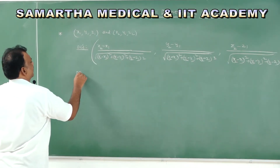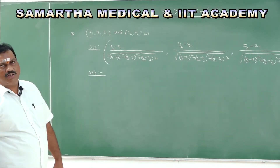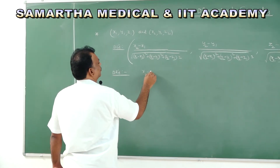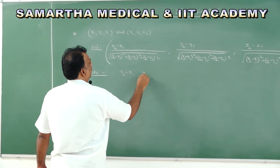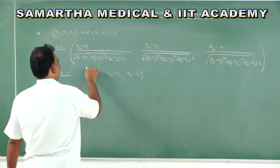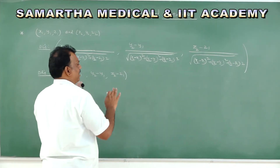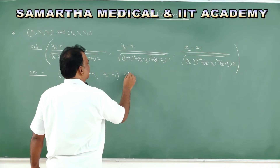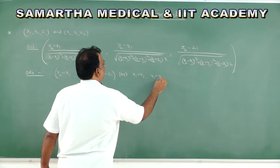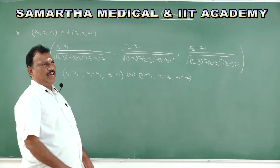Similarly, when given two points, we know the direction ratios formula: x2 minus x1, y2 minus y1, z2 minus z1. We can also use x1 minus x2, y1 minus y2, z1 minus z2 — either formula is valid for direction ratios.